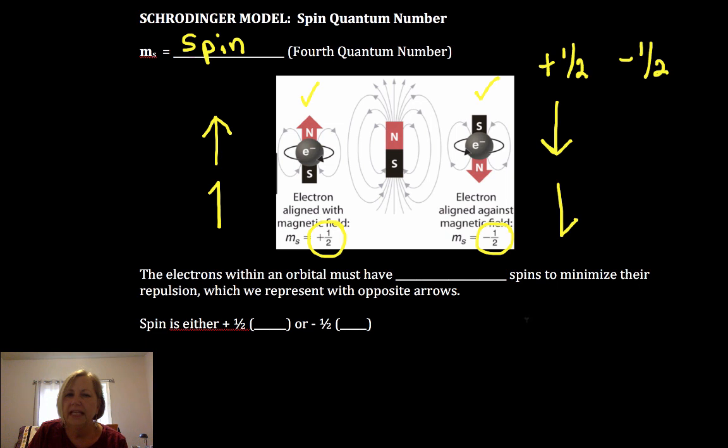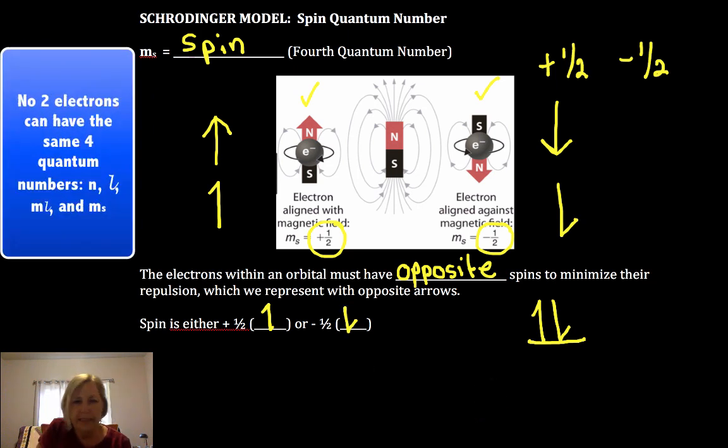So electrons within an orbital, we use a line or a box or a circle to represent the orbital, electrons within that must have opposite spins in order to minimize their repulsion. So they would go in spins opposite like this. Remember the spins are either going to be plus one-half or minus one-half and they're going to go in spins opposite.